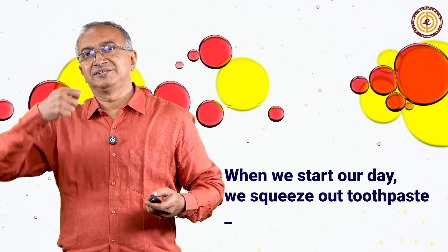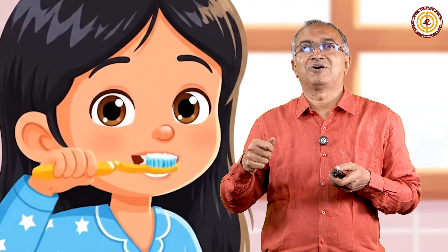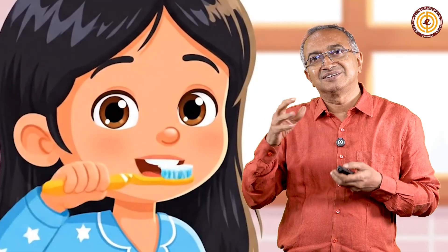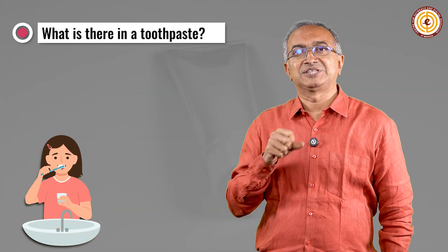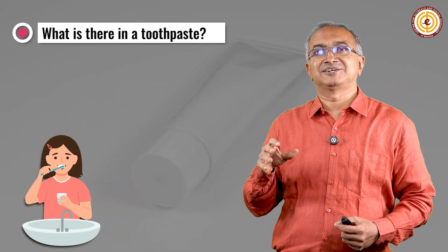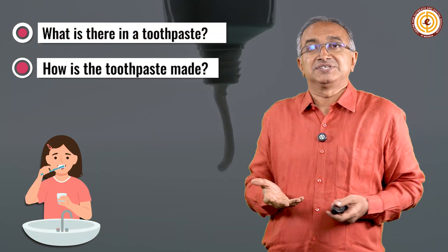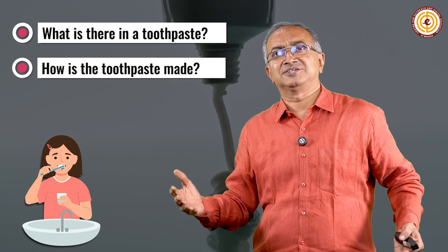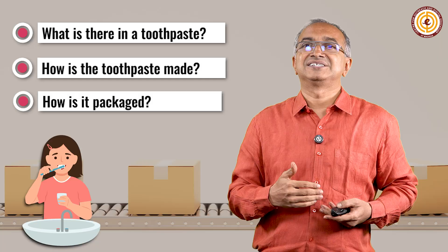If you remember when we start the day early in the morning, we have toothpaste in a tube and we slowly take it out. It stays when it comes out on the brush and it doesn't really fall off. The questions that can arise in our mind are: what is in this toothpaste? How are the molecules interacting with each other? How are the chemicals being added so that it comes out very smoothly but stays on the brush? How is it made at large scales? We are using tons and tons of toothpaste in our everyday lives. How is it packaged so that it reaches us?